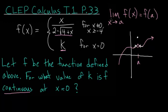Even if the limit approaches the same value from the left and the right, that value is not equal to the function evaluated at a. The only way for a function to be continuous is for the function evaluated at a to essentially fill in the hole, so that the limit as x approaches a from both sides equals the value we get when we plug a directly into the function.